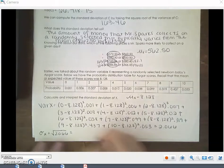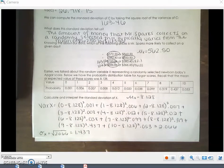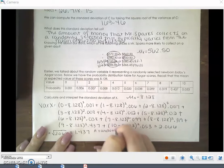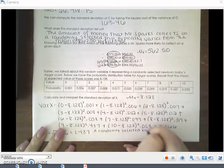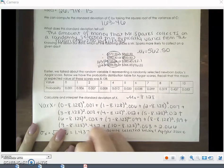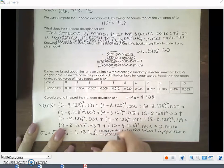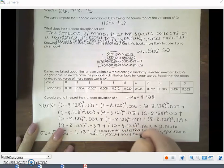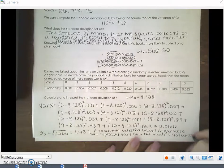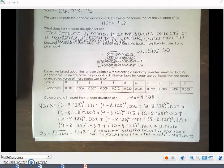So to interpret this, you would say a randomly selected newborn baby's APGAR score will typically vary from the mean by about 1.437 units. That's the perfect way to interpret your standard deviation.